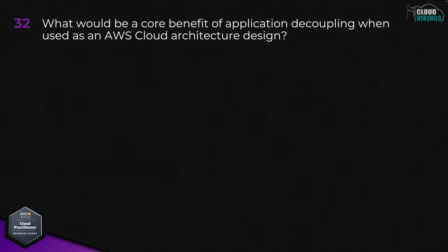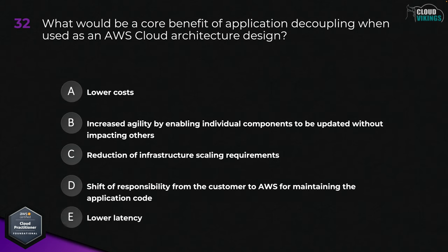Question thirty-two: what would be a core benefit of application decoupling when used as an AWS cloud architecture design? Options are: A, lower costs; B, increased agility by enabling individual components to be updated without impacting others; C, reduction of infrastructure scaling requirements; D, shifted responsibility from the customer to AWS for maintaining the application code; or E, lower latency. The correct answer is B, increased agility by enabling individual components to be updated without impacting others.